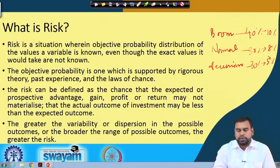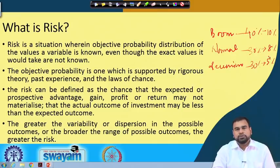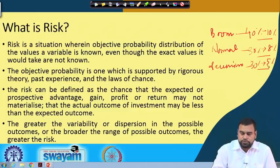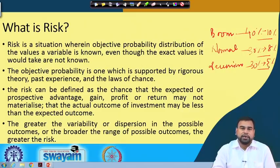If there is a boom, there is a 40 percent chance with a return of 10 percent. There is a 30 percent chance the market will be in normal condition with a return of 8 percent. And if there is a recession, also a 30 percent probability, you can get 5 percent return. So here, whenever we talk about return from the market, we define a probability distribution and assign probabilities to different outcomes, even though we do not know exactly which return will be realized.